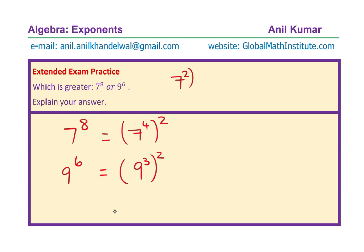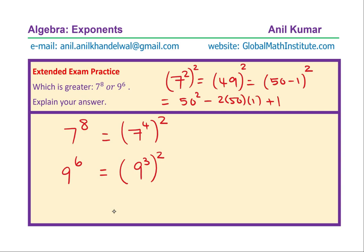We could think like this: 7 to the power of 4 is 7 squared, squared, which is 49 squared. 7 squared is 49. 49 squared means 50 minus 1, whole square. Without a calculator, you can easily do these calculations. That is 50 squared minus 2 times 50 times 1 plus 1, which gives 2500 minus 100 plus 1. So 7 to the power of 4 is 2401, and therefore 7 to the power of 8 is 2401 whole square.